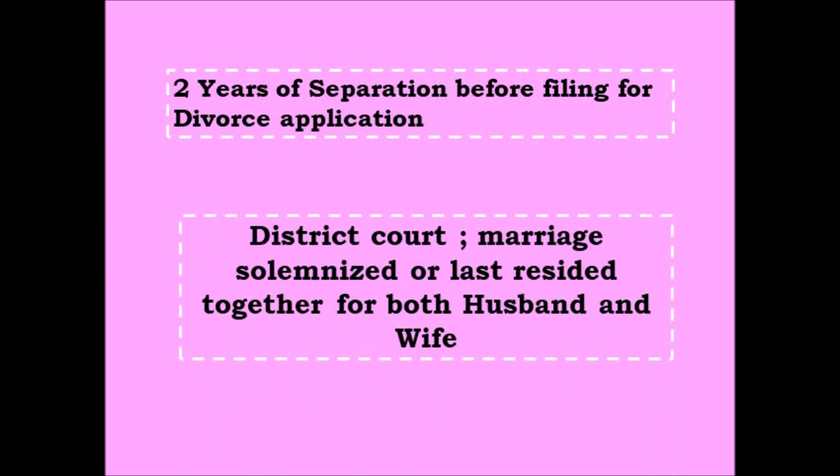If there is a separation, there are two parties and one party will go to another place. So where you are currently living, you cannot necessarily file an application. You can file in the court where you got married, where the marriage was consummated, or where you last resided together as husband and wife.